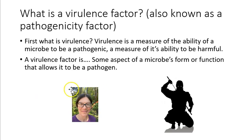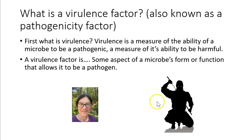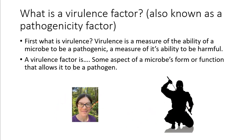Here's an analogy: a garden-variety human causing nobody harm at all — completely avirulent, lacking the ability to be harmful — versus a deadly ninja who could be considered highly virulent. What allows one to be deadly? The sword is part of the form; the trained ability to kill is the function. Those aspects make this human quite virulent through virulence factors.